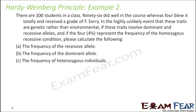Let us look at another example. There are 100 students in a class; 96 did well in the course whereas 4 received a grade of F. In the unlikely event that these traits are genetic, involving dominant and recessive alleles, and the 4 represent the frequency of the homozygous recessive condition — please calculate the following. Homozygous recessive is denoted by q².